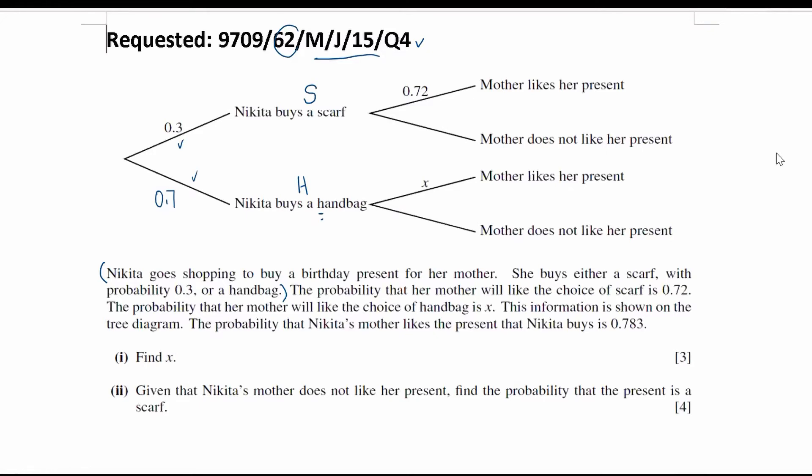The probability that her mother would like the choice of scarf is 0.72. The probability that her mother would like the choice of handbag is X. This information is shown on the tree diagram. The probability that Nikita's mother likes the present that Nikita buys is 0.783.